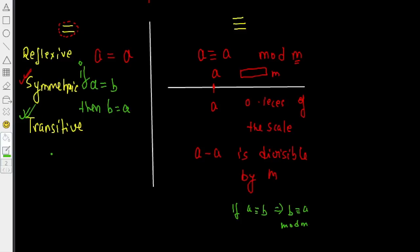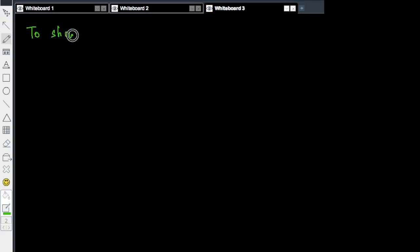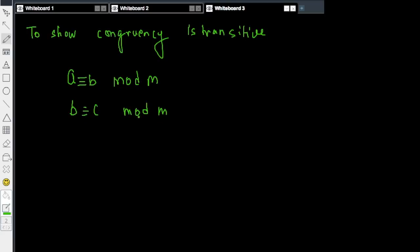And finally, we have the transitive relation. That is, if A equals B and B equals C, then C equals A. Which is obviously true. We can easily understand that this particular property is true for equality. Is it true, however, for congruency? So we want to show congruency is transitive. We know that A is congruent to B mod M and B is congruent to C mod M. Suppose these two are given. We want to show that A is congruent to C mod M.